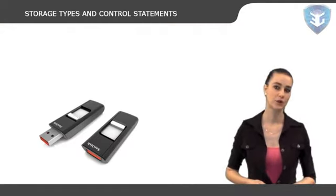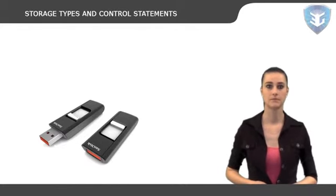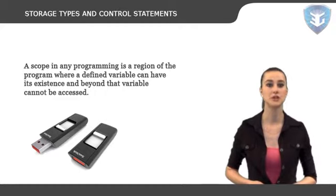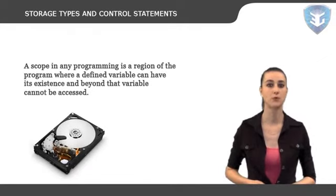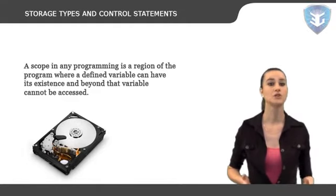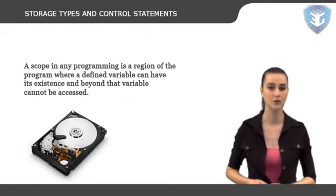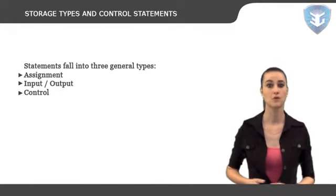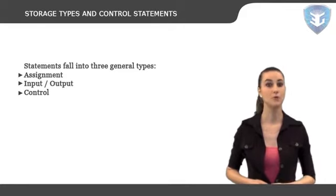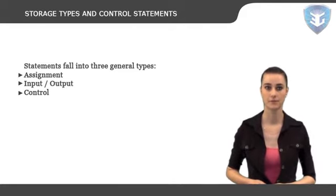Let's start with a brief introduction. A scope in any programming is a region of the program where a defined variable can have its existence, and beyond that the variable cannot be accessed. C programming language is popular for its capability of decision making. The storage class determines the part of memory where storage is allocated for an object and how long the storage allocation continues to exist. Statements fall into three general types: assignment, where values are stored in variables; input/output, where data is read in or printed out; and control, where the program makes a decision about what to do next.